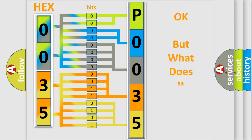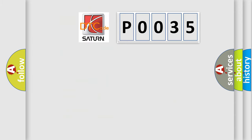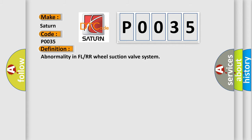The number itself does not make sense to us if we cannot assign information about what it actually expresses. So, what does the diagnostic trouble code P0035 interpret specifically for Saturn car manufacturers? The basic definition is: Abnormality in FL or RR wheel suction valve system.